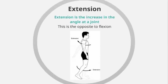Moving on to extension — the definition of extension is the increase in the angle at a joint, and this is completely opposite to flexion. Going back to our bicep curl, extension of the elbow would see the arm being straightened. In the bicep curl, this would be when we are lowering the weights so the arm comes straight again.